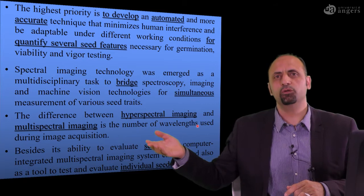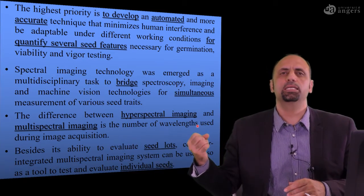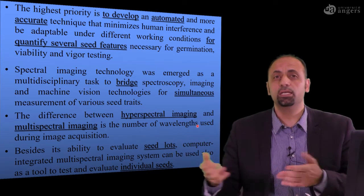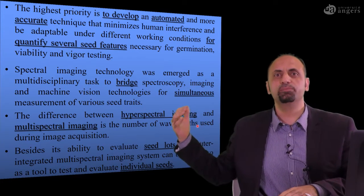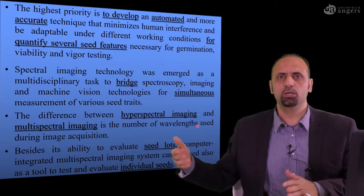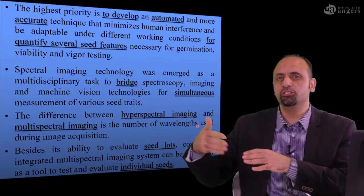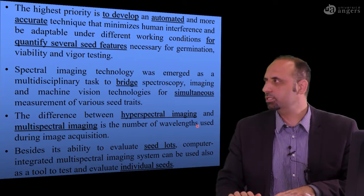Imaging to give you information about the dimensions, color, texture, all of the appearance of the seeds. In addition, you need to have spectroscopy, spectral information. Why spectral information? Because it gives you some information about internal structure, internal properties, like chemical composition of your seed.